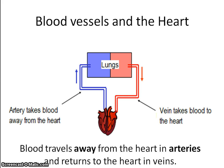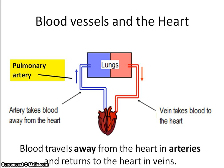The first key point to be made is that blood travels away from the heart in the arteries, always in arteries, and returns to the heart in veins. Associated with the lungs are the pulmonary blood vessels, so blood travelling to the lungs happens in the pulmonary artery and back to the heart in the pulmonary vein.